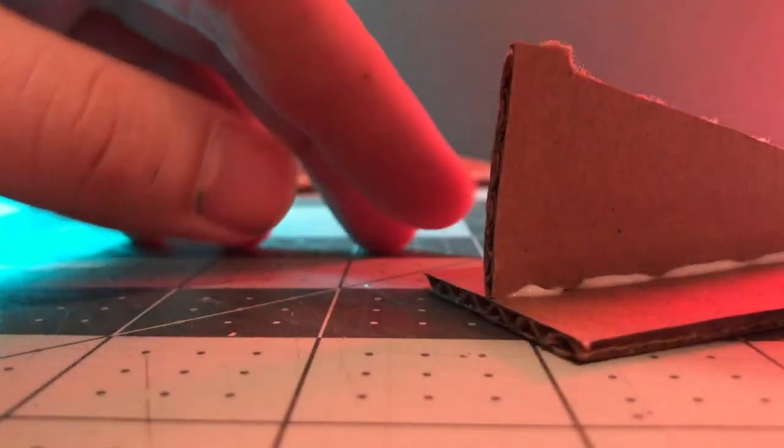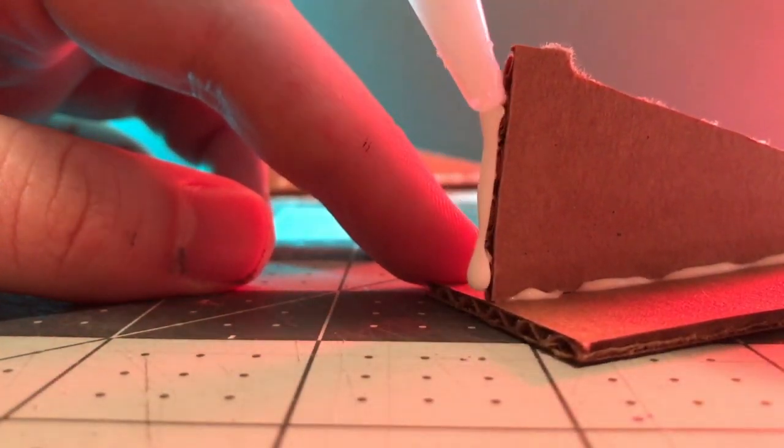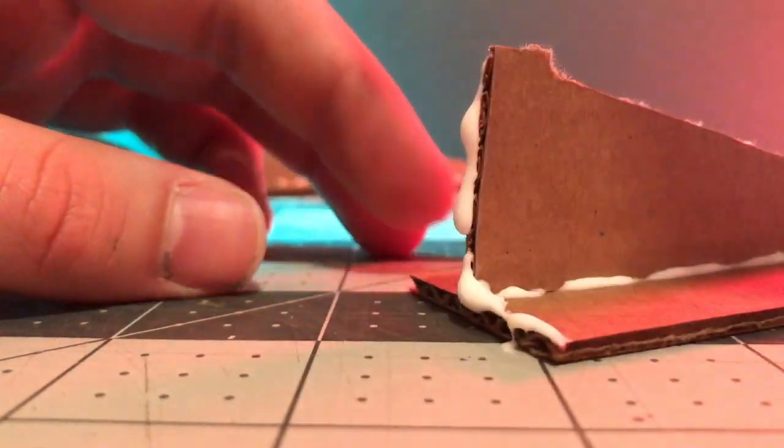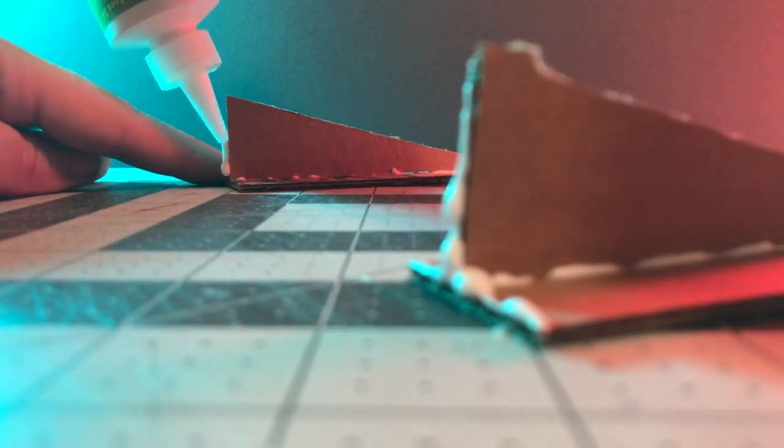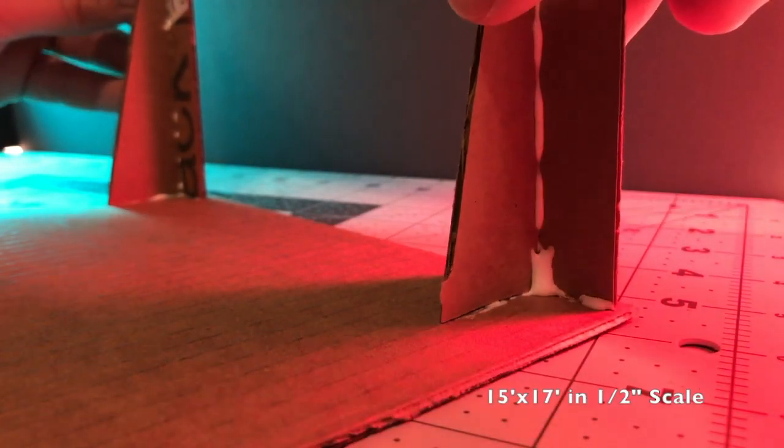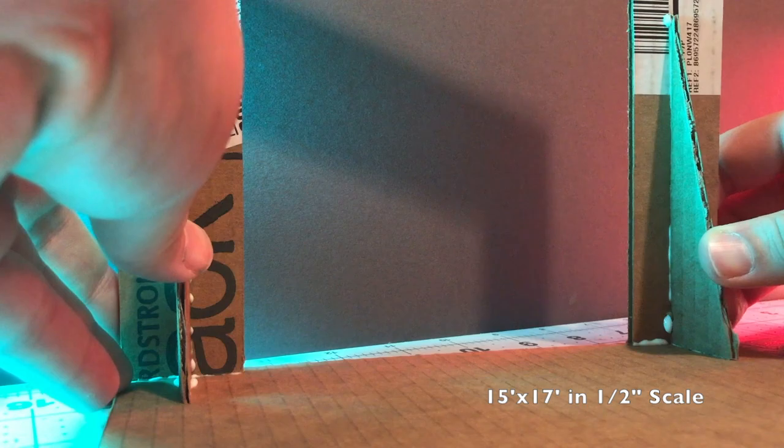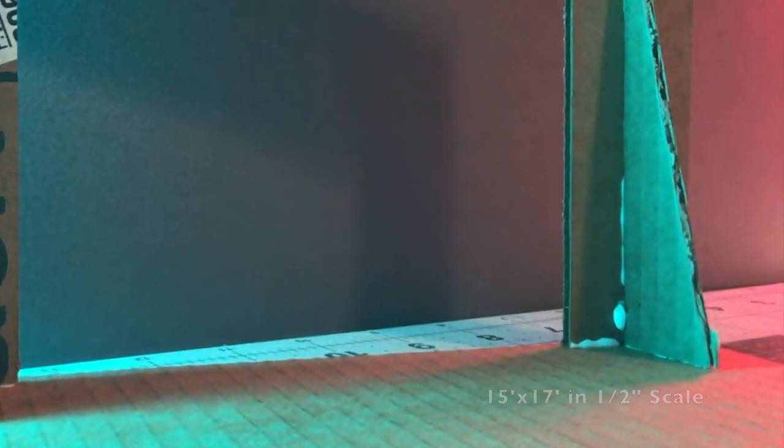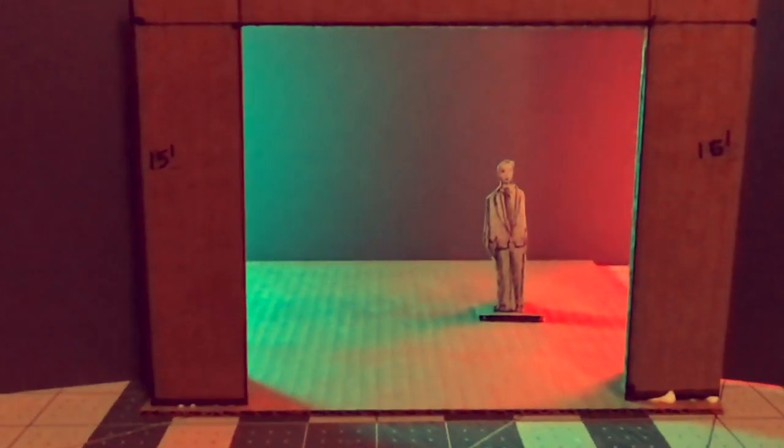After the glue has dried a bit on your proscenium jack joints, apply glue to the bottom of the jacks. Then attach the proscenium structure to the other piece of 15 by 17 foot cardboard you marked out earlier. Let the glue dry and there you have a model box for a set model.